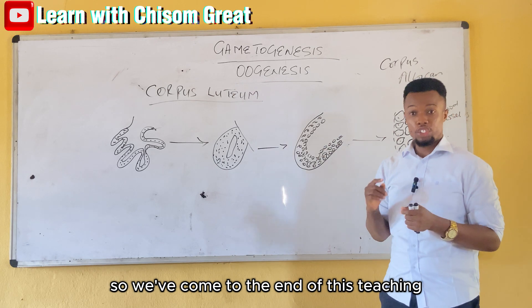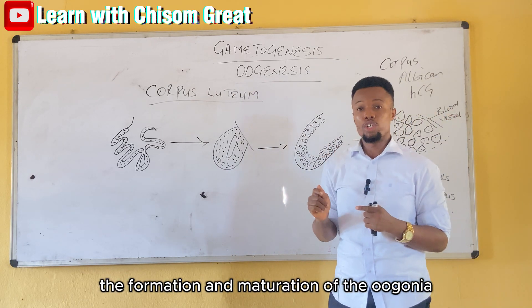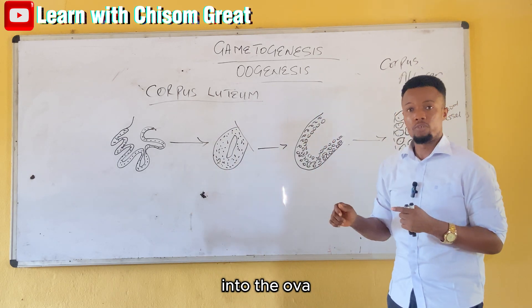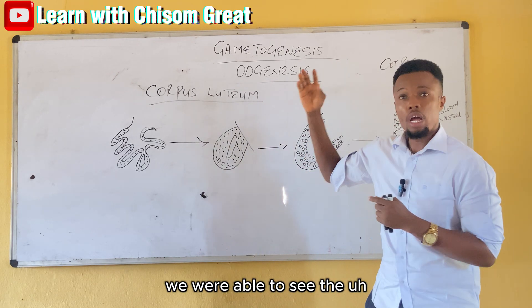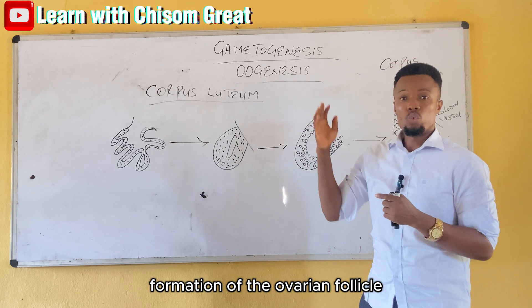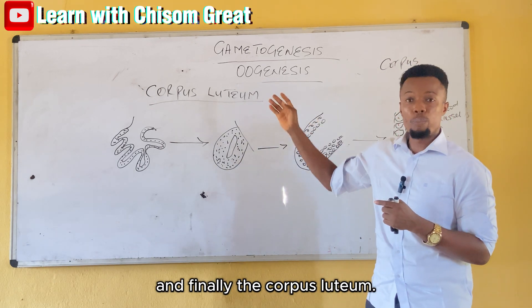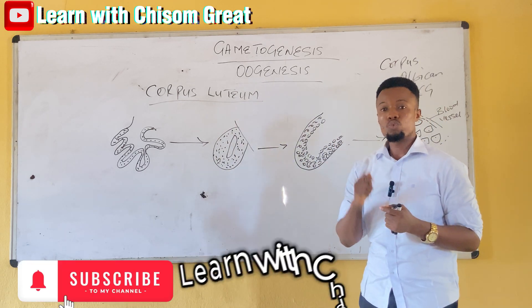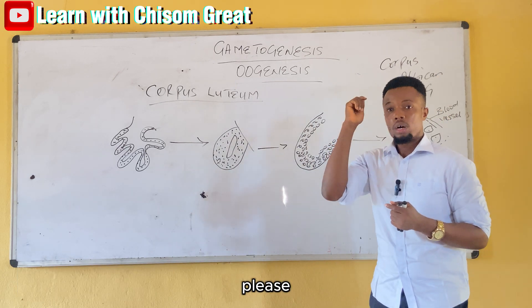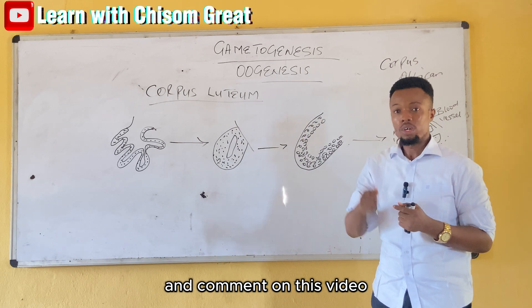So we've come to the end of this teaching. We've been able to see the formation and maturation of the oogonia into the ovum, ovulation, the formation of the ovarian follicle, the fate of the ovum, and finally the corpus luteum. Please subscribe to my YouTube channel, Learning with Chisholm. Share, like, and comment on this video. Thank you very much.